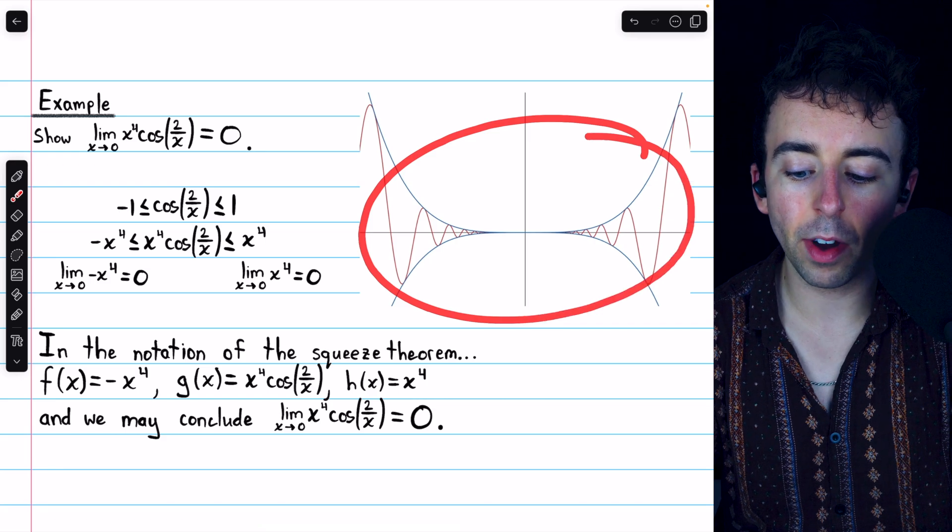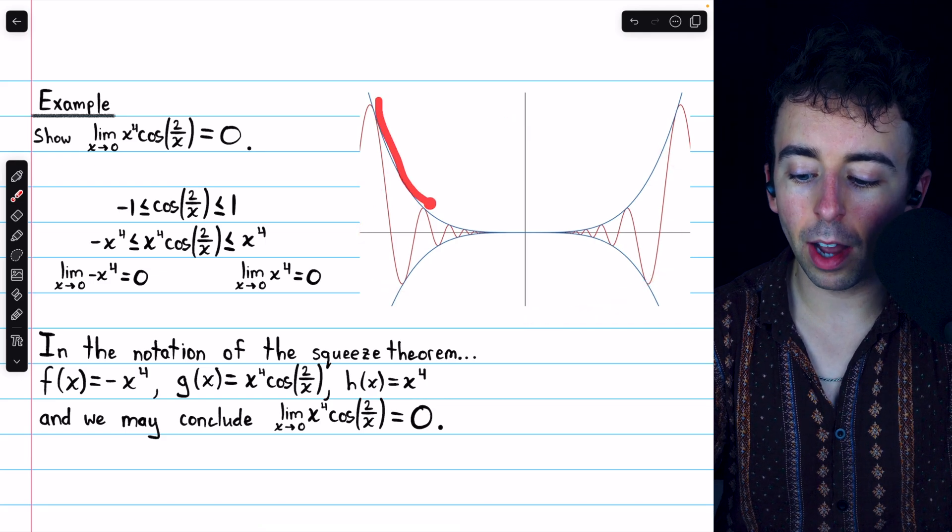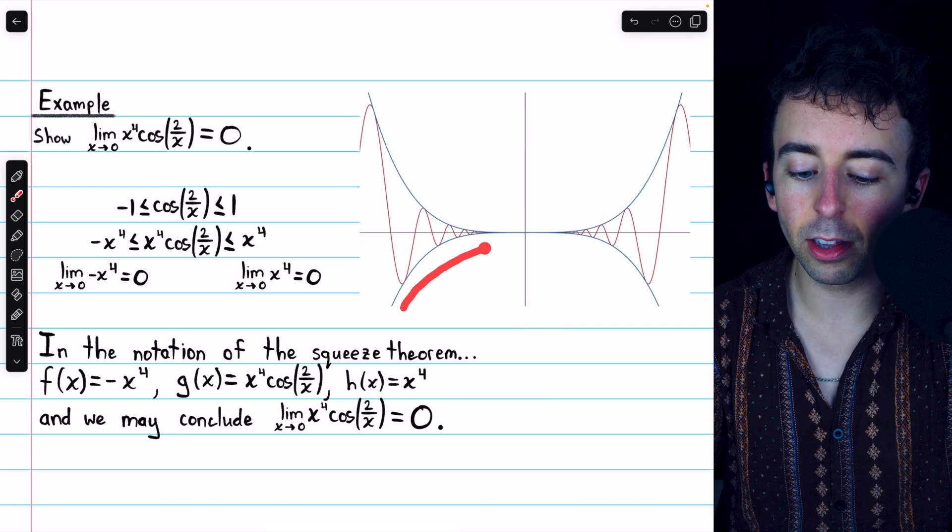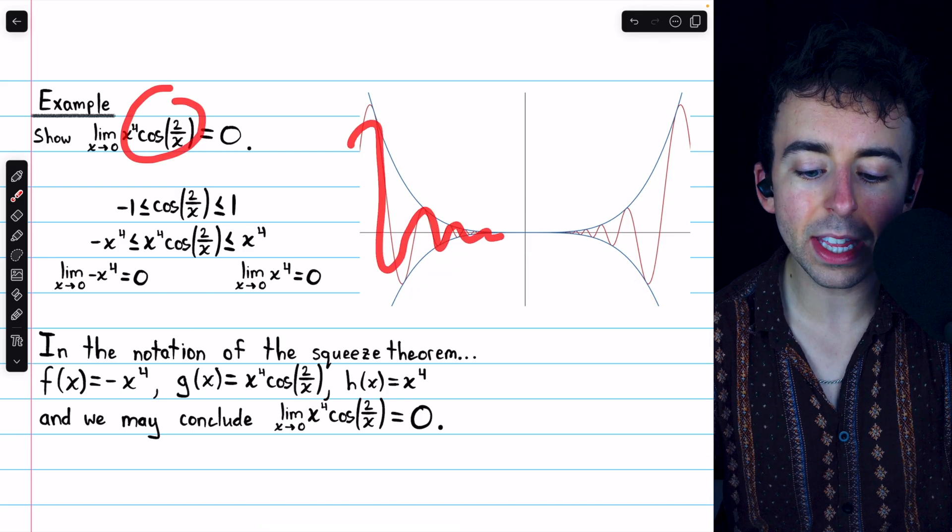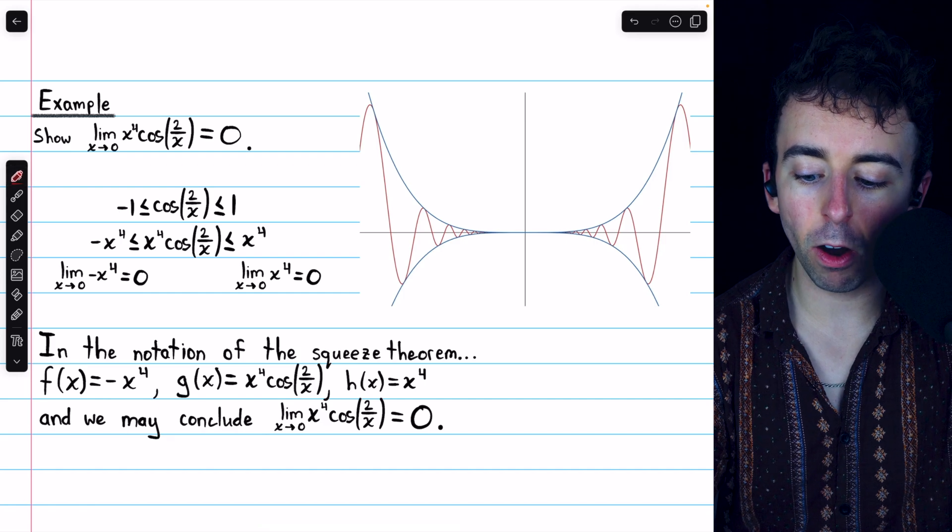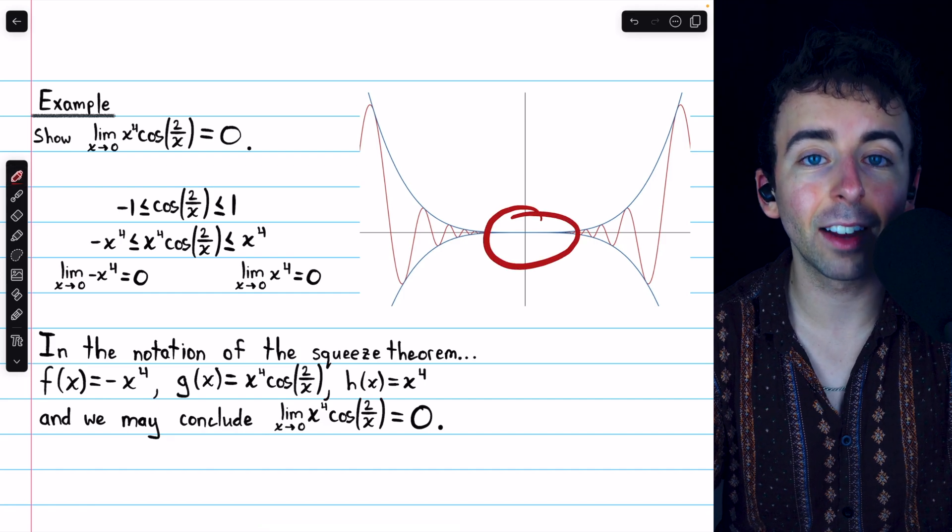And here's a graph of the involved functions. Again, you can see positive x⁴, negative x⁴, and x⁴ times cos(2/x), which is squeezed between them, and it's clear that they are all approaching 0 as x approaches 0.